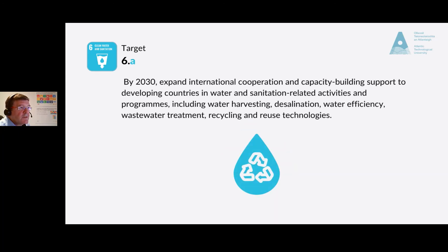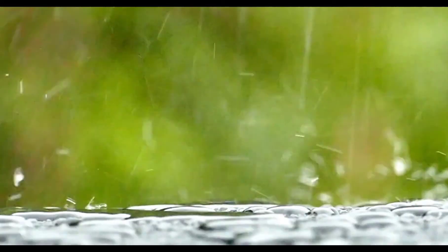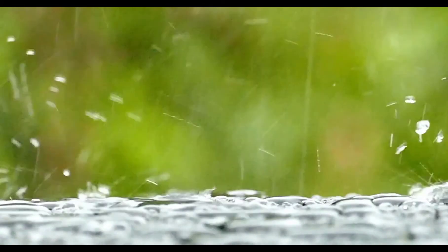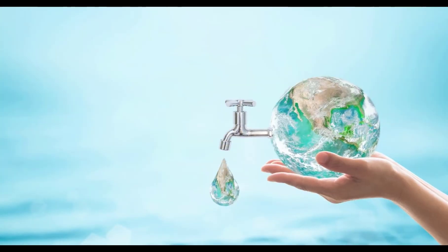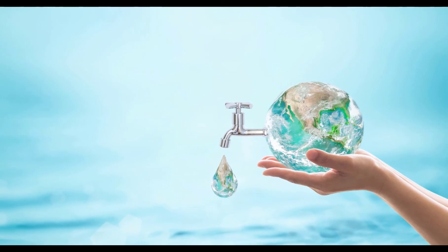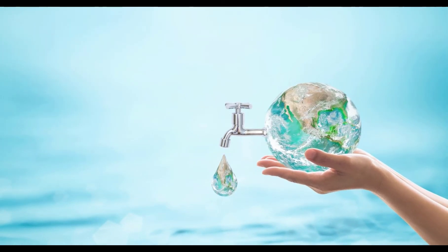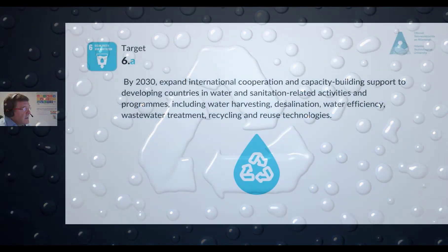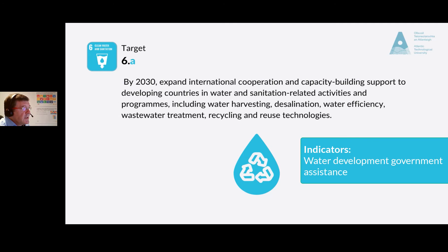Target 6a: by 2030, expand international cooperation and capacity-building support to developing countries in water- and sanitation-related activities and programs, including water harvesting, desalination, water efficiency, wastewater treatment, and recycling and reuse technologies. Water harvesting systems collect rainwater from roofs, footpaths, or other solid surfaces. Desalination removes salt from seawater. The indicator for this target is the amount of water- and sanitation-related official development assistance that is part of a government-coordinated spending plan.